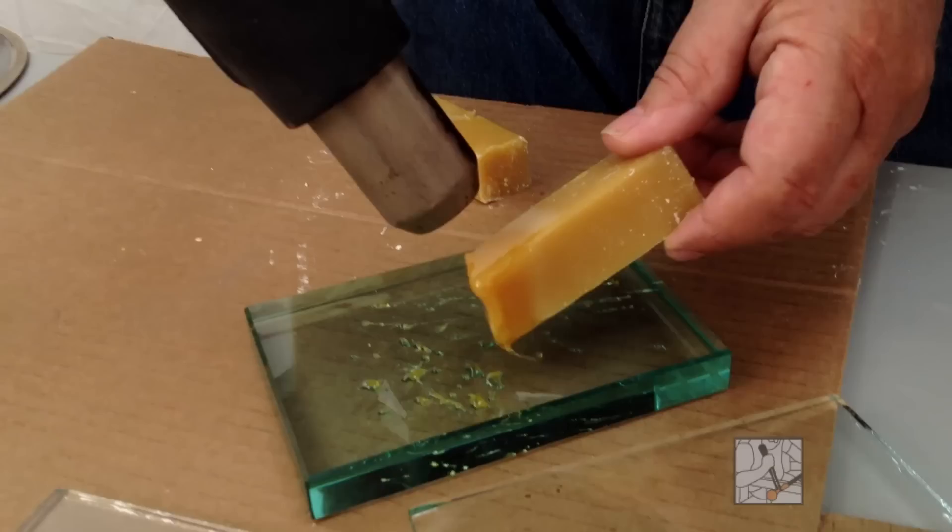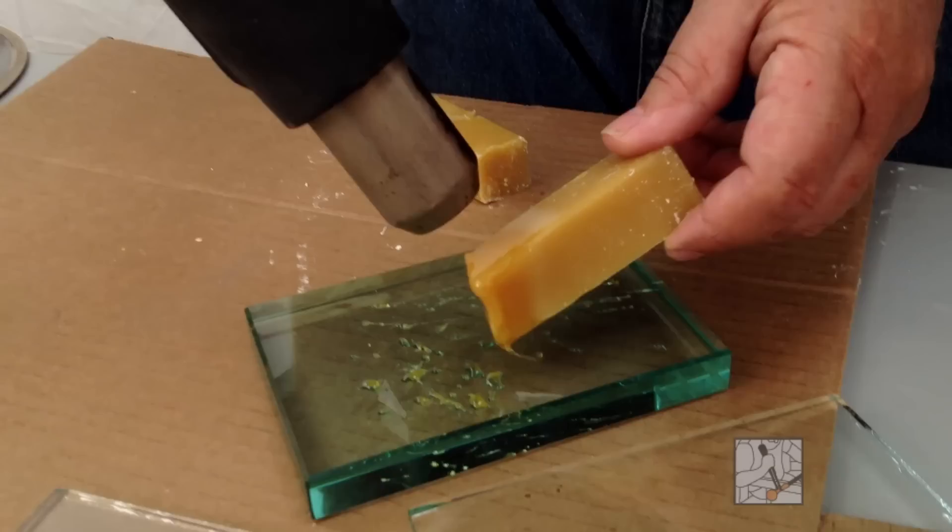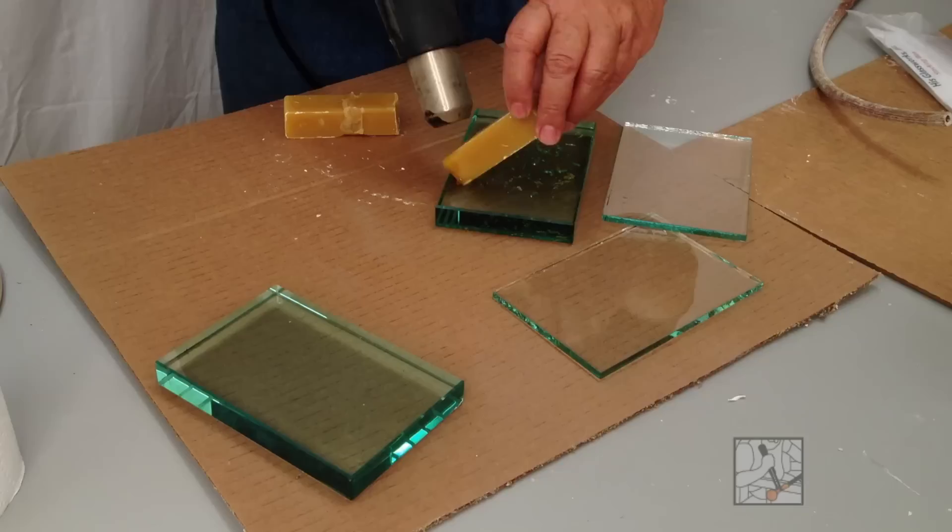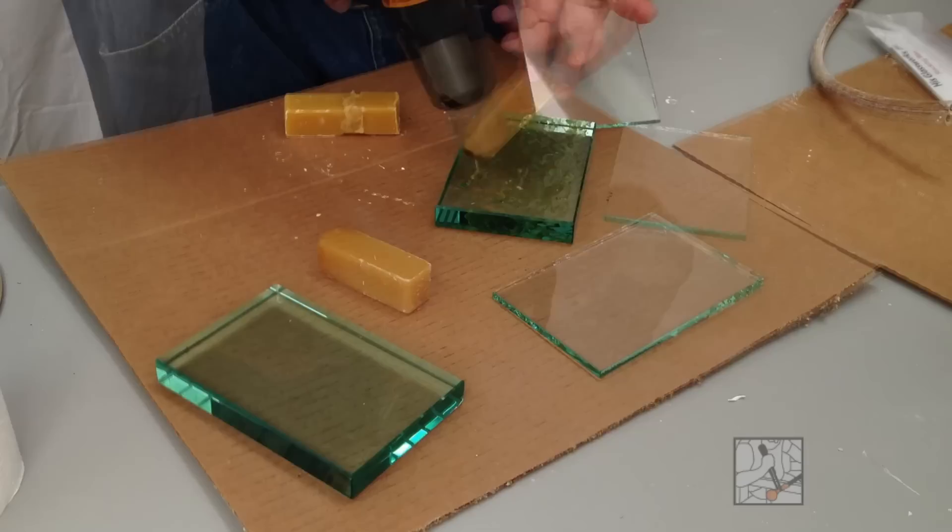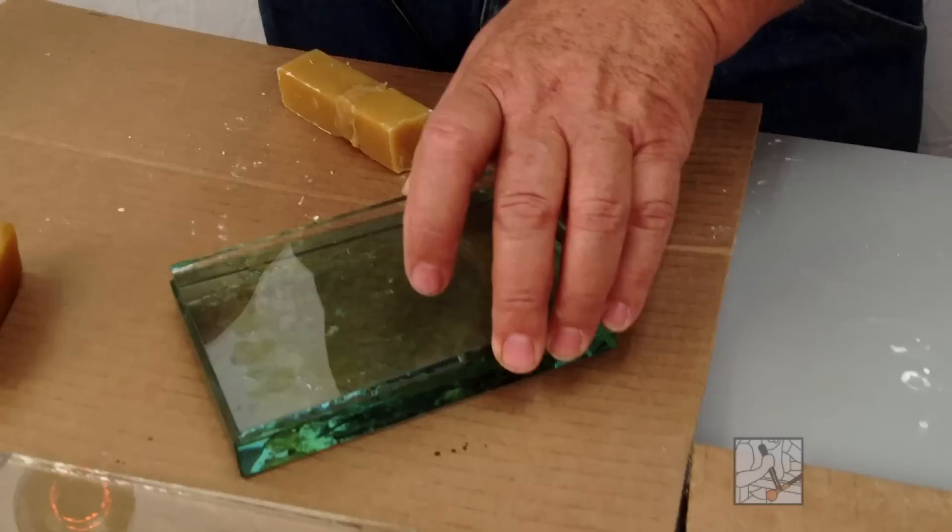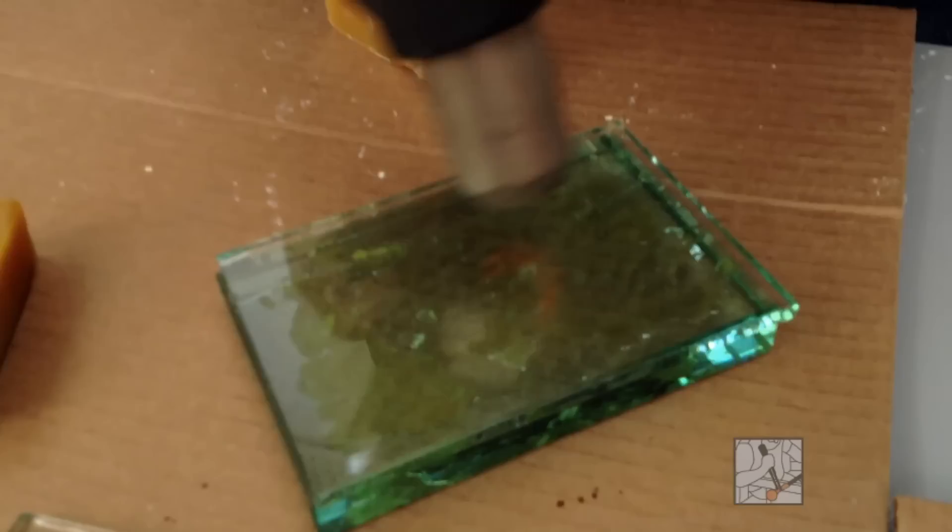You can see I am working on a piece of cardboard. I just don't want wax all over my workbench. Once the wax is hot enough, I'm going to bring my glass down onto it, heating this glass to heat the wax beneath it.